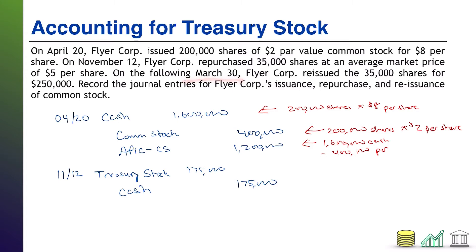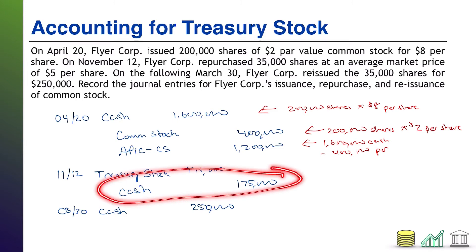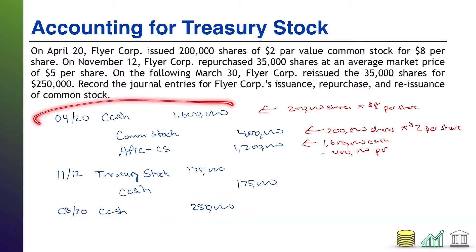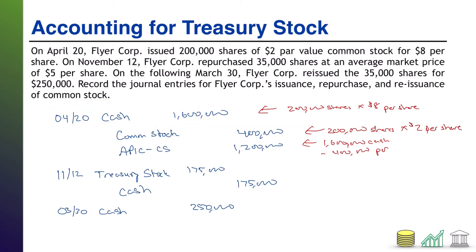Now that takes us to March 30th. On March 30th, we reissue all 35,000 shares for a grand total of $250,000 cash. You can see the appeal of a treasury stock transaction here — notice we only paid $175,000 and now we're getting back $250,000. On stock that we already received cash for issuing one time, we are now receiving even more cash by issuing it a second time. That's the appeal of treasury stock.